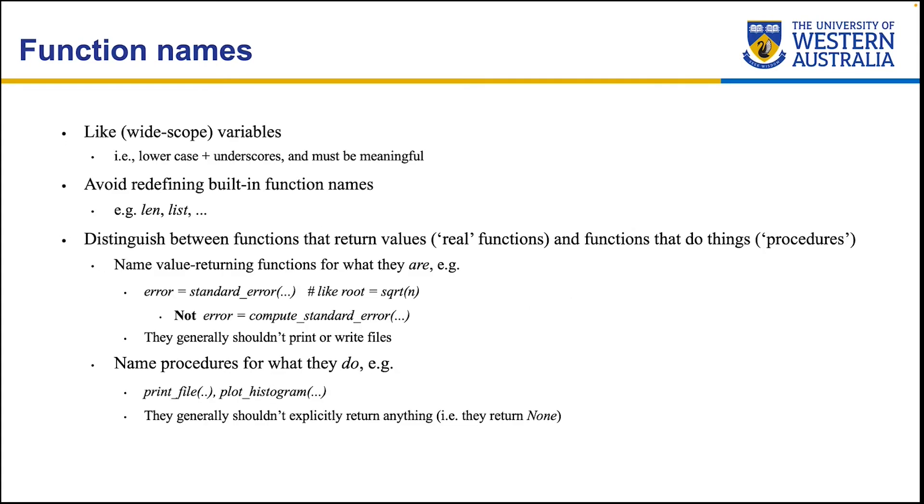Function names. Like wide scope variables, we want to use the lowercase plus underscores and must be meaningful. So it's very similar to your variable names, but now it's used for function names. Avoid redefining built-in function names, for example, len, list, and things like that, because you lose the ability to reuse them later on. And also it becomes very confusing if you override it to do something else. But in other parts of the code, you might expect the default behavior rather than the one that you have rewritten. So it's better to use a function name that differs to the built-in function names. Usually in your IDE, if you type in a built-in function name, it will highlight it for you.